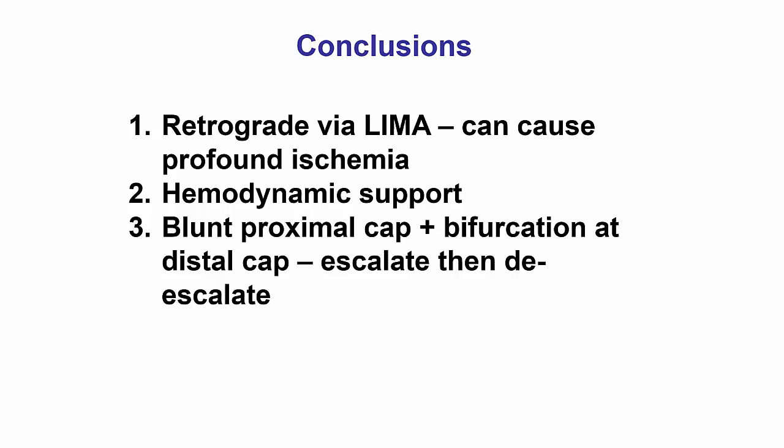Third, the case shows the challenges associated with a blunt and impenetrable proximal cap due to severe calcification, as well as a bifurcation on the distal cap. In this case, despite using very stiff guidewires, we were unable to penetrate through the proximal cap. However, we were able to cross the distal cap using a Confianza Pro 12 and then a polymer-jacketed Fielder XT to create a knuckle and cross subintimally into the proximal cap.